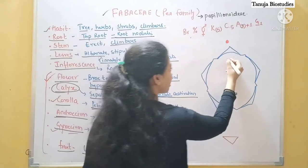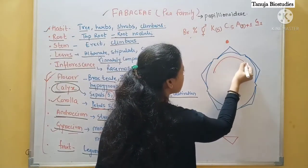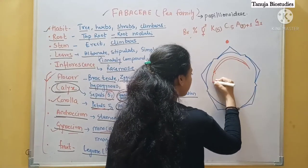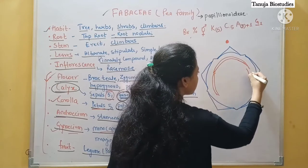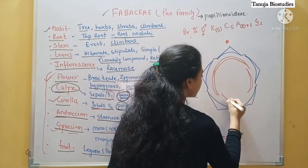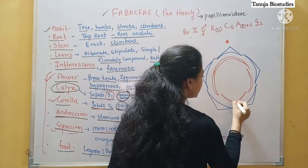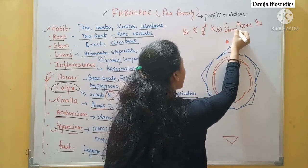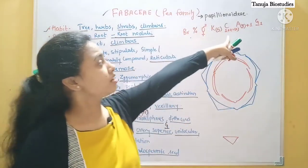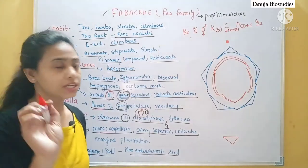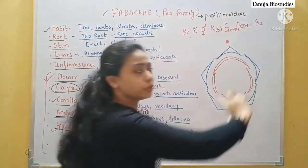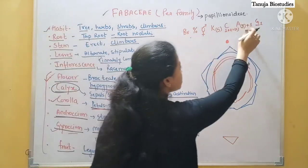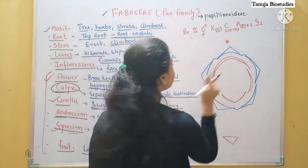Now for corolla: five petals with vexillary aestivation. I will show here one large petal which we call the standard. Then we show the two wings. And here the two keel petals which are jointed. So one plus two plus two — the bracket shows the fusion of the keel. We can write the formula like this — one plus two plus two, with a bracket showing the joined keel. Next, the androecium: ten stamens, nine jointed and one single — diadelphous with 9+1 arrangement.